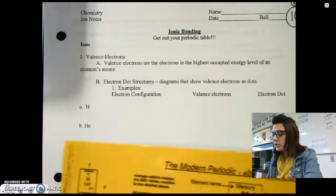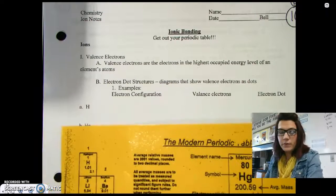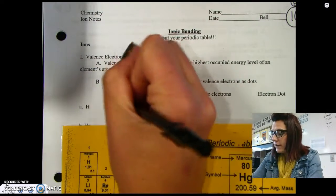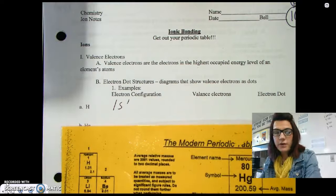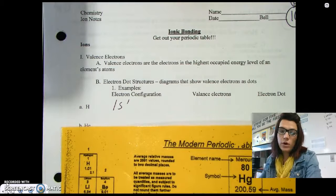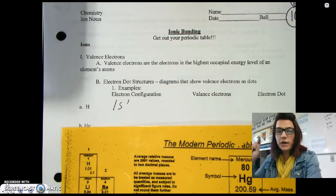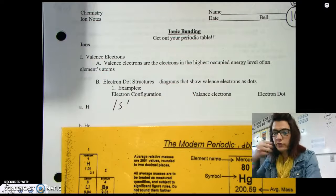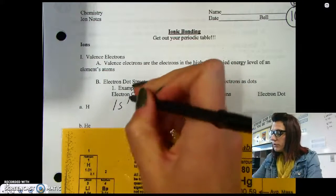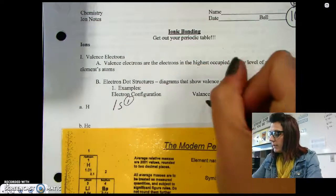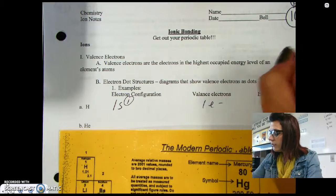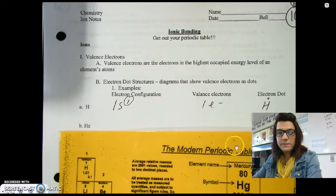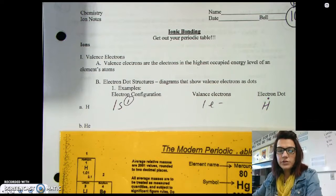The first one is easy — it's just hydrogen. Hydrogen's electron configuration is 1s1, which means it has one electron in the 1s energy level. Since there's only one electron, that means it has one valence electron. Therefore, hydrogen's Lewis dot will look something like this.